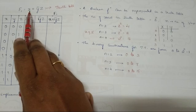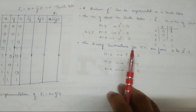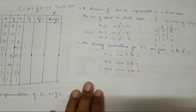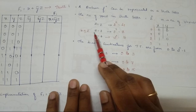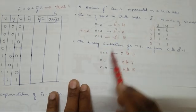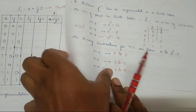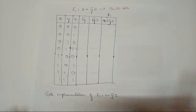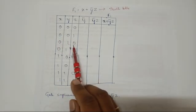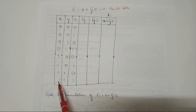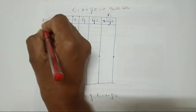Here, x, y, and z are the three variables. When we have three variables, the number of rows must be 2³ = 8. The entries go from 0 to 7: 0 0 0, 0 0 1, 0 1 0, 0 1 1 — totally 8 entries.